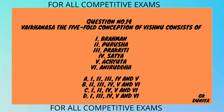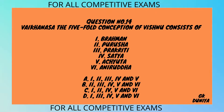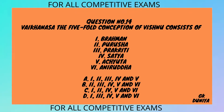Question No. 14. The Vaikhanasa five-fold conception of Vishnu consists of which of the following: Brahman, Purusha, Prakriti, Satya, Achyuta, Aniruddha? A. 1, 2, 3, 4 and 5, B. 2, 3, 4, 5 and 6, C. 1, 2, 4, 5 and 6, D. 1, 3, 4, 5 and 6.